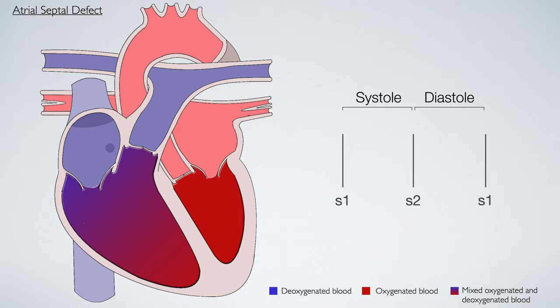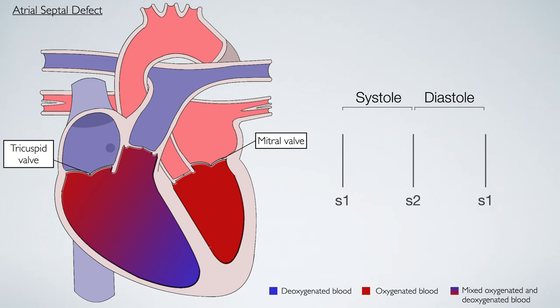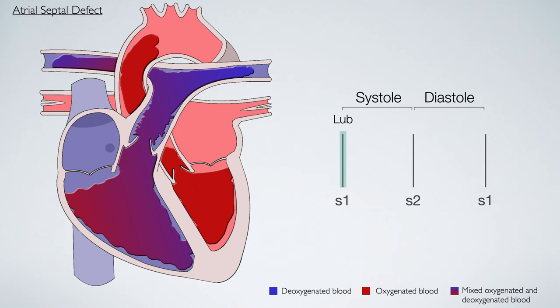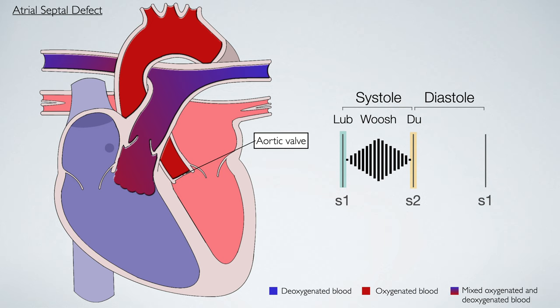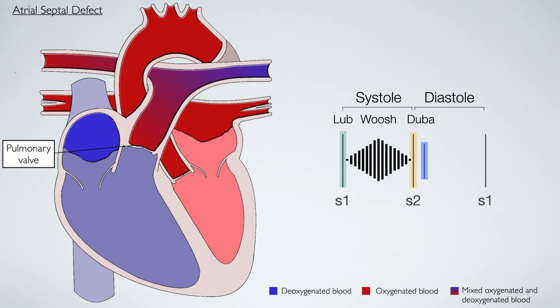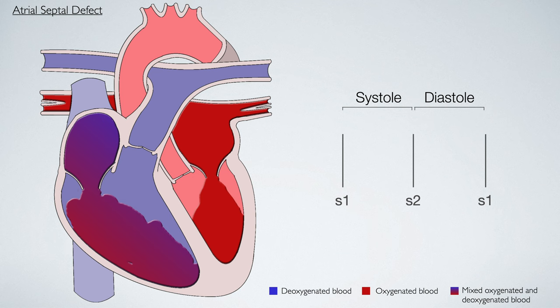Adding back in the aorta and pulmonary artery: the S1 heart sound is produced by closure of the mitral and tricuspid valves. Systole then occurs and the ventricles contract, forcing blood through the pulmonary and aortic valves. It is the increased volume of blood in the right ventricle being forced through the pulmonary valve that produces turbulent blood flow, resulting in our crescendo-decrescendo systolic murmur. The aortic valve closes producing the first half of S2, and delayed closure of the pulmonary valve — due to the increased volume of blood in the right ventricle — produces the split S2.